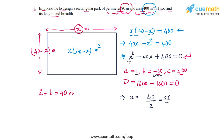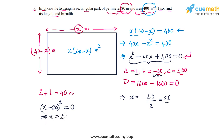You could also figure this out by factorizing. The expression factorizes as a perfect square: x minus 20, whole square. So the equation becomes (x minus 20) squared equals 0, giving x equals 20. Both roots are identical. The answer is: yes, it is possible to design such a rectangular park, with x equal to 20 for one of the sides.